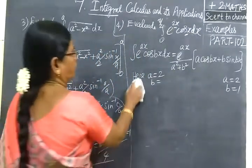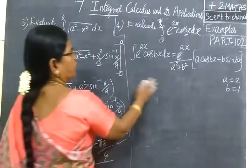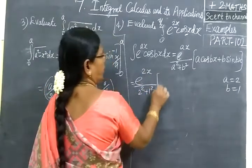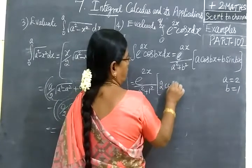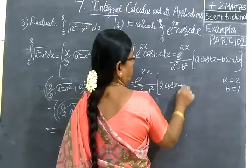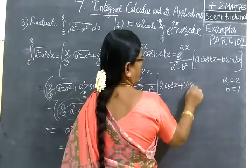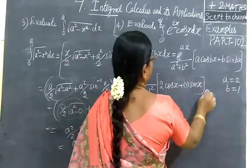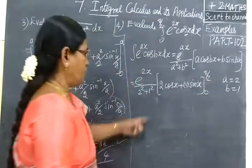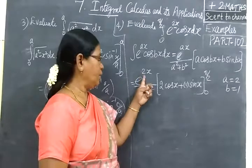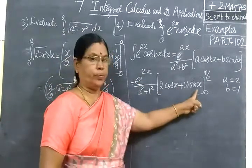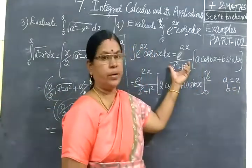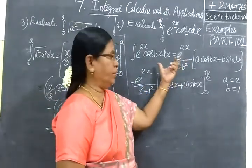You can do it in the line. So for that, we apply the limit. So e^(2x)/(2² + 1²), then 2 cos x, for b you are writing 1, so no need to write. Then wherever b, you write 1. Then sin x. Now apply the limit. Limit is 0 to π/2. So in the place of a, 2, a in the line 2 put. B in the line 1 put. So a equals 2, b equals 1. This formula, already we know, it is given in the text book. Introduction part. That you recall.